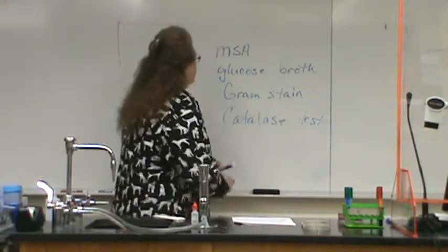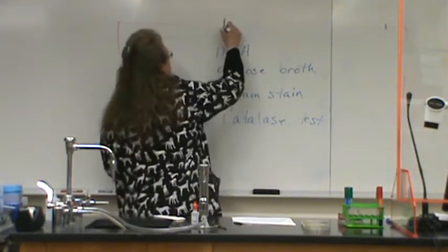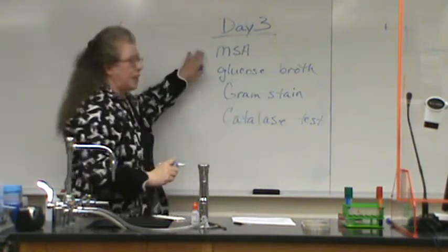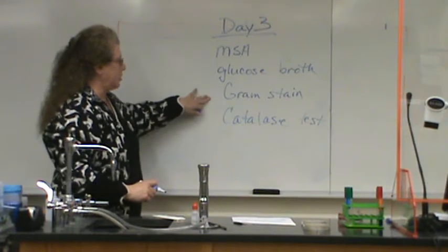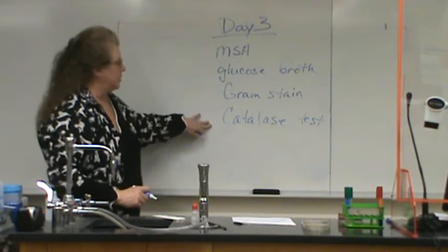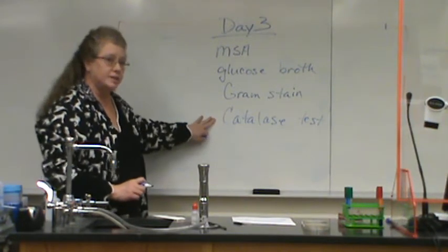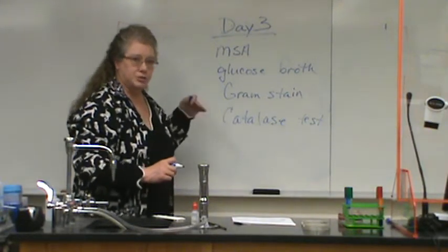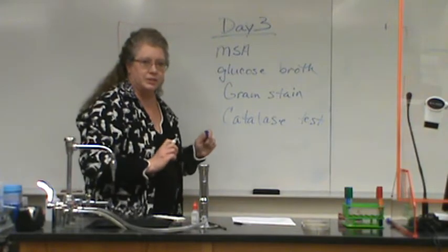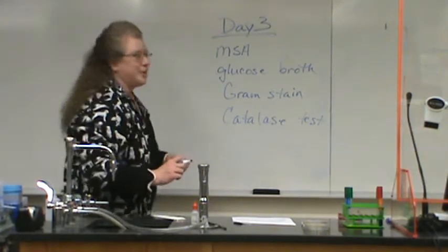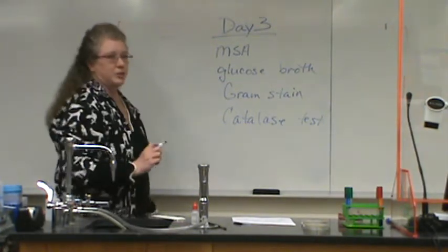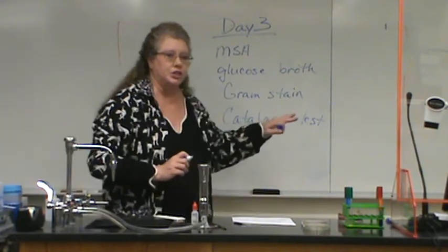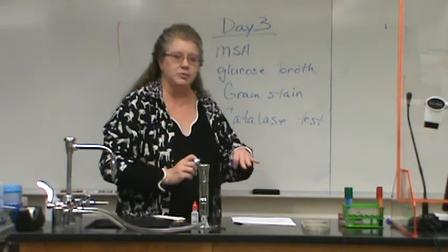The tests we're doing today on day three are: the MSA plate, glucose broth, gram stain, and catalase test. The only thing new to you is the catalase test — the others you should already know about and be able to explain the results. These tests are going to help you narrow down which genera your unknowns belong to.